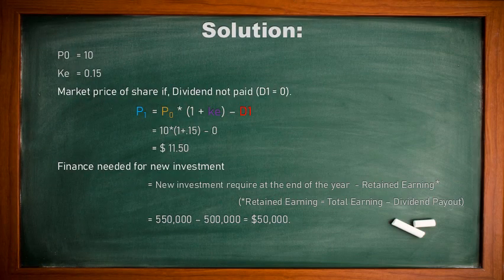Solution: P0, the beginning price of the share, is $10. Cost of capital is given as 15%. We will put the formula for the market price of the share if dividend is not paid. If dividend is not paid, it means D1 = 0. Let us put the values in the given formula: P1 = P0 × (1 + k) − D1.